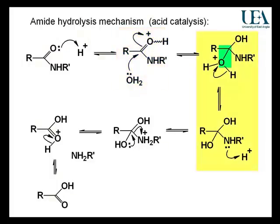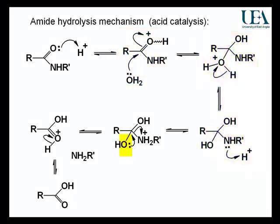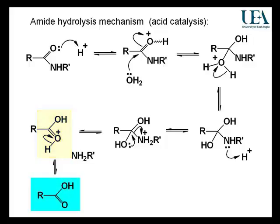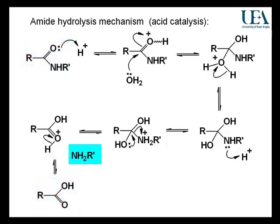New carbon-oxygen bond. Rearrange the position of protonation. This is a heteroatom lone pair used to break the carbon-nitrogen bond this time. And then a loss of a proton to complete the mechanism to get through to the carboxylic acid. So the amide has become a carboxylic acid and an amine at that stage in the mechanism.